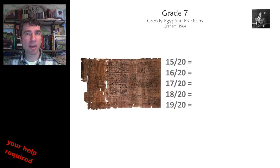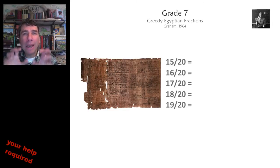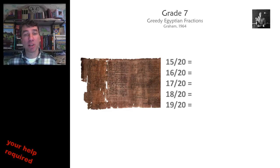But perhaps you want to go with another Egyptian fraction problem. Take any fraction, like 15 over 20. You can degrade that into Egyptian fractions by greedily taking the largest Egyptian fraction at each step. So the largest Egyptian fraction that fits into 15 over 20 is 1 half.